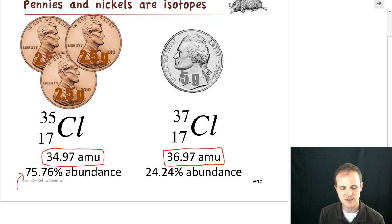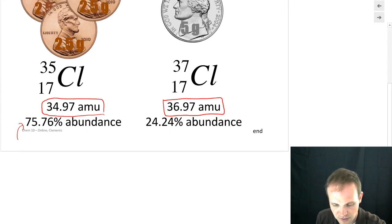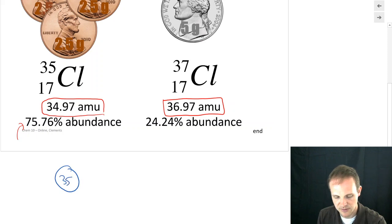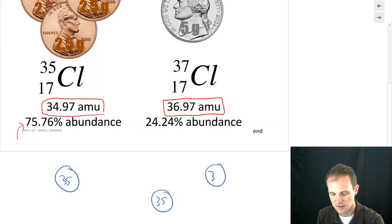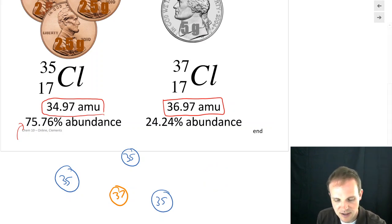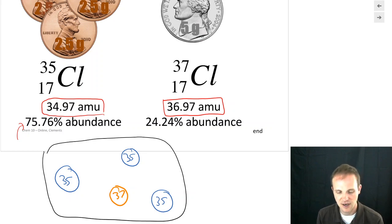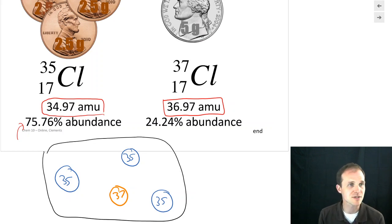Below those masses I've got this thing called abundance. What does abundance mean? It means if I had a giant pile of these things — a bunch of chlorine-35s and a pile of chlorine-37s — for every collection on average, about 75% of them, in this case three out of four, are going to be chlorine-35, and about 25% of them are going to be chlorine-37. We're going to use those numbers as our counts.